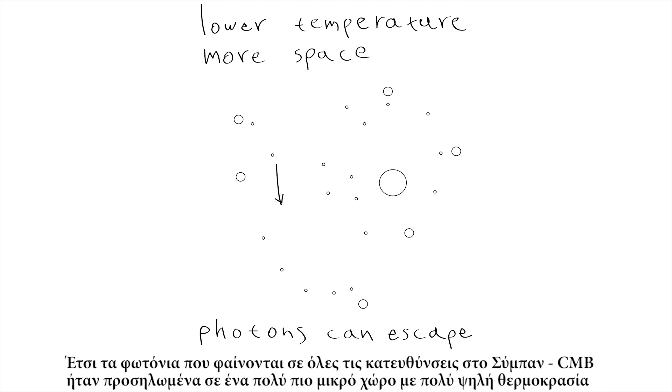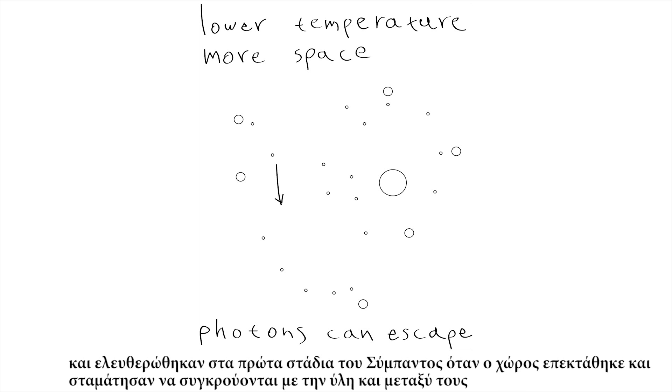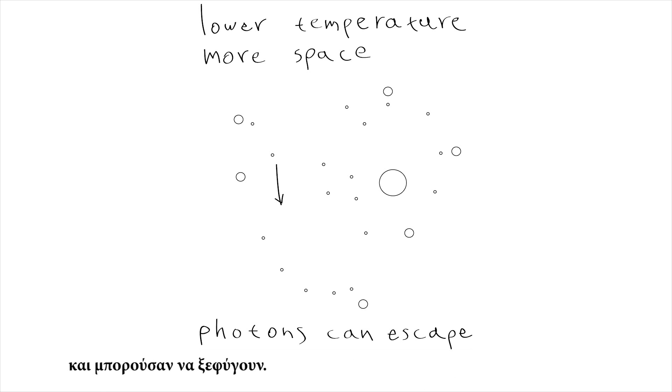So the photons that are seen in all directions in the universe, CMB, were confined in a much smaller place with a really high temperature and were released in the early stages of the universe when space expanded and they no longer collided with matter and each other and they could escape.